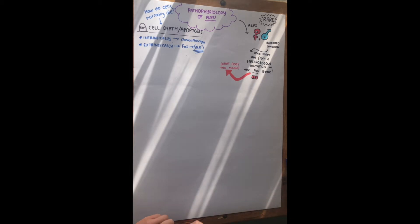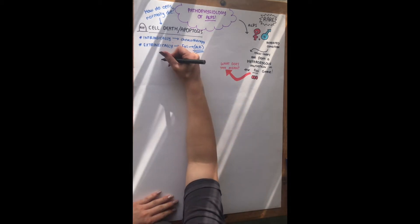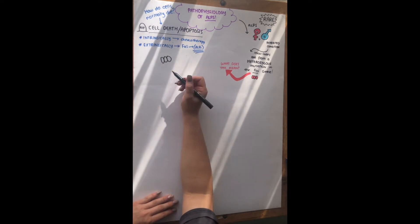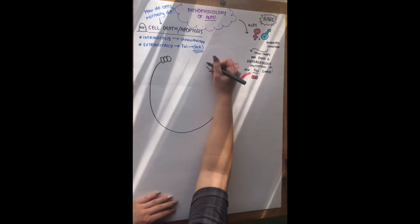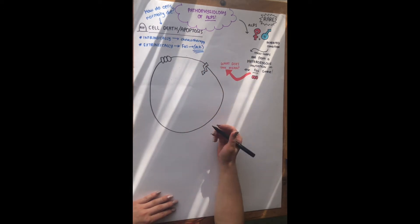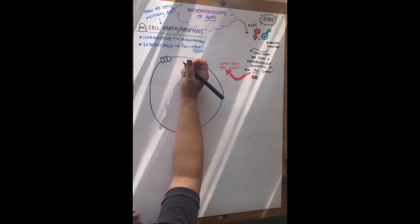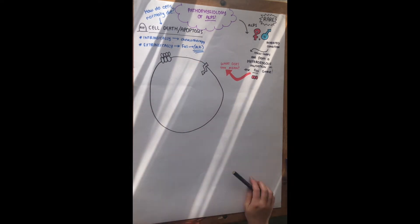And intrinsically is things like chemotherapy and DNA damage through x-rays, and sometimes we do this to induce death in things like cancer. And then there's also extrinsically, and that's through FAS, and FAS is a receptor on the cell. So here I'm just drawing, this is a FAS ligand, and this binds to FAS, which is what I'm coloring in pink.